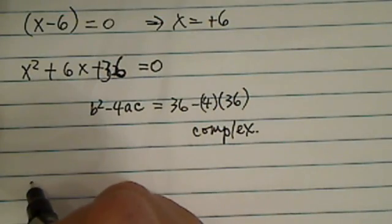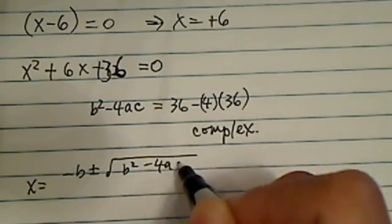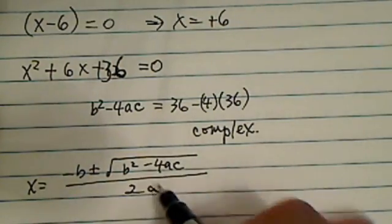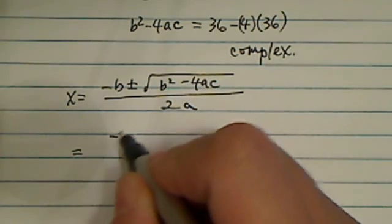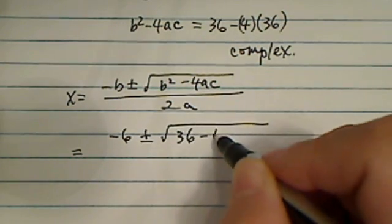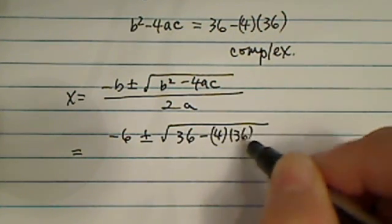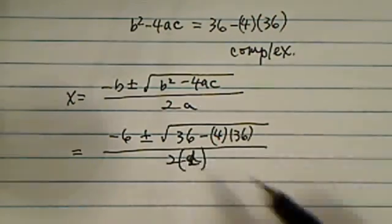And then what you need to do is x equals minus b plus or minus square root of b squared minus 4ac, divided by 2a. Let's go ahead and solve this one. So you have minus 6 plus or minus, we had 36 minus 4 times 36 earlier, divided by 2a, which is 2 times 1 in this case.